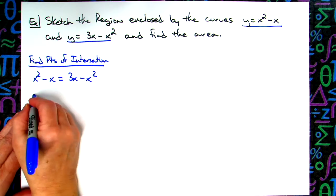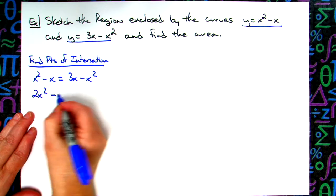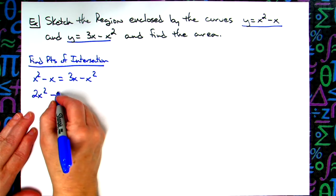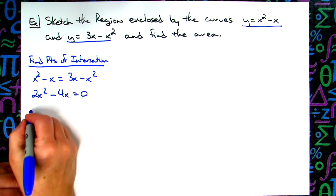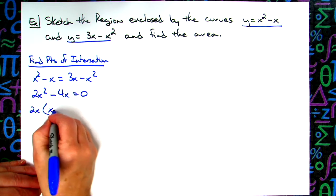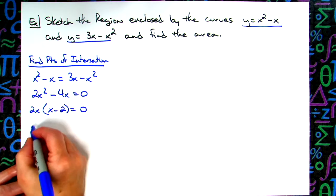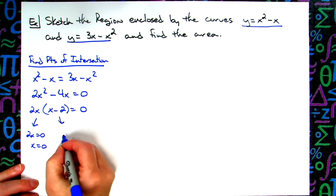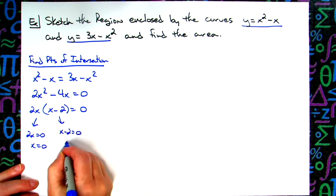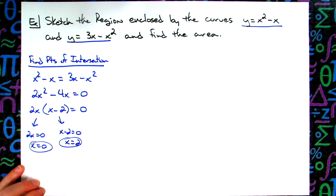So I'm going to add x squared to both sides. That'll give me 2x squared. And then I'm going to subtract 3x from both sides. That'll give me minus 4x equals 0. I'm going to factor out 2x. That'll give me x minus 2 equals 0. I'm going to use the zero product principle then and set each one of these equal to 0. 2x equals 0 means x equals 0, and x minus 2 equals 0 so x equals 2. So my two intersection points are going to be at 0 and 2.